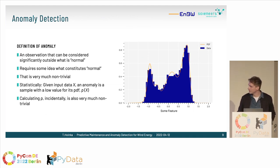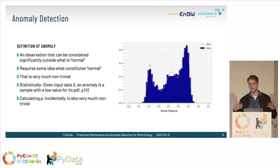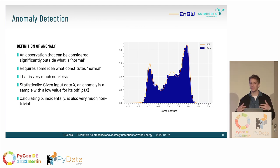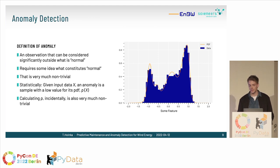Now, anomaly detection and why it's such a hard problem. If you ask what an anomaly is, you'd say something that's not normal — but defining 'normal' is actually very hard. It's not purely objective; the business case is interwoven into the definition. For a wind turbine, normal means producing as much electricity as possible. Statistically, you might define a density and call anomalies observations in regions where that density is very small — but even in the univariate case, fitting a density from data alone is notoriously difficult.